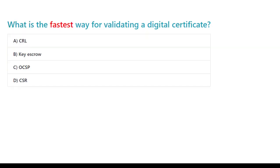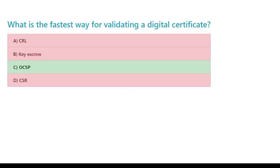What is the fastest way for validating a digital certificate? A. CRL. B. Key Escrow. C. OCSP. D. CSR. The correct answer is C. OCSP.